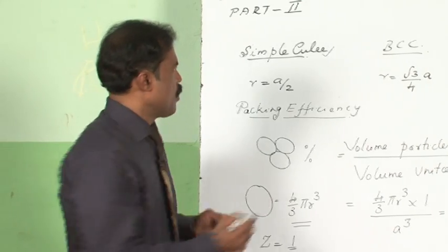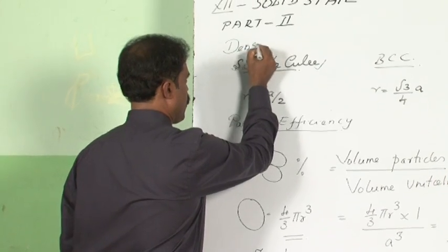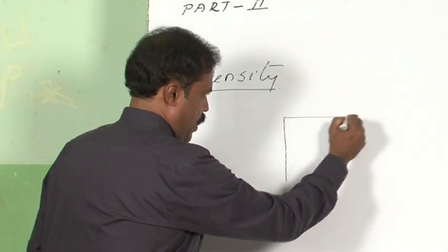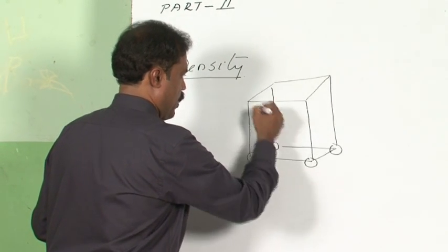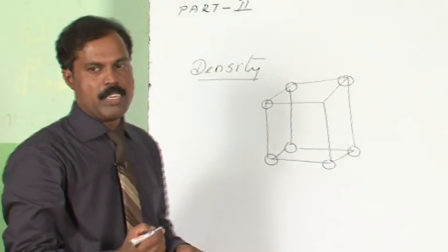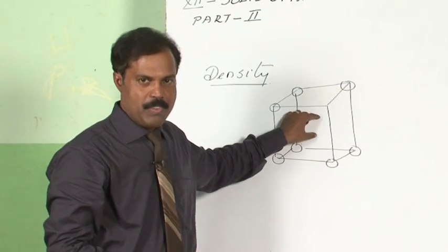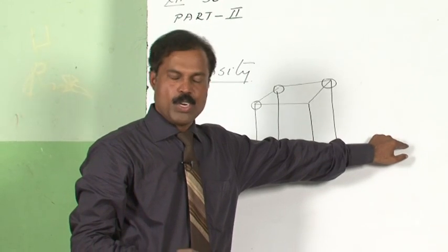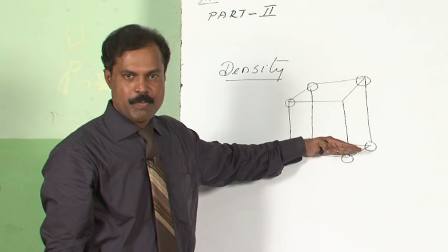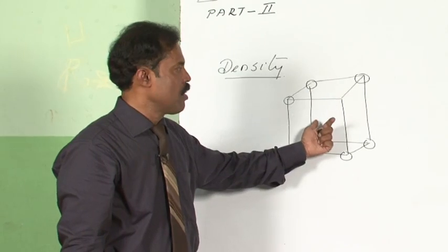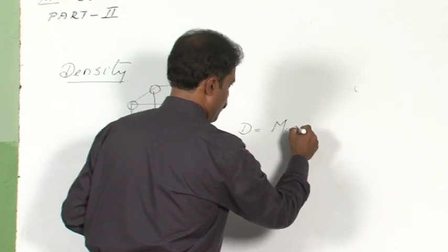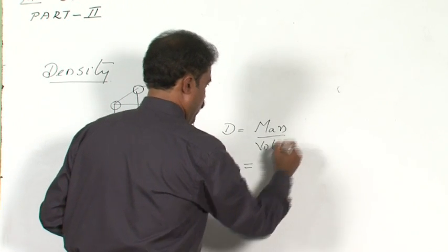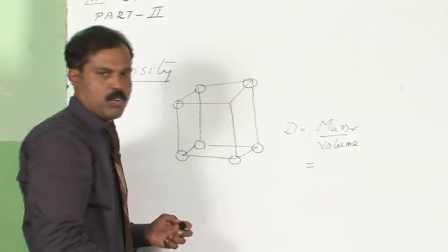Now we move on to finding the density of a crystal. If you take a simple cube with particles only at the corners, the density of the unit cell equals the density of the crystal, since the whole crystal is made up of such unit cells. Density equals mass divided by volume, so we need the mass and volume of the unit cell.